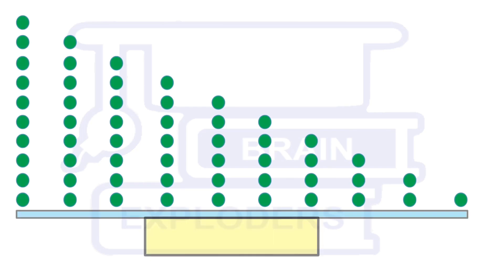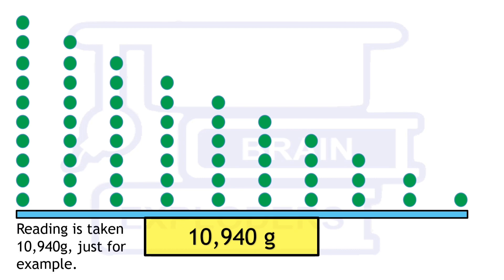Now put these balls on the weighing machine. Here also, the weighing machine can give any reading, so let us take 10,940. This is taken just for example, the weighing machine can show other readings also. So put 11,000 minus 20n equals to 10,940. On solving, we get n equals to 3.